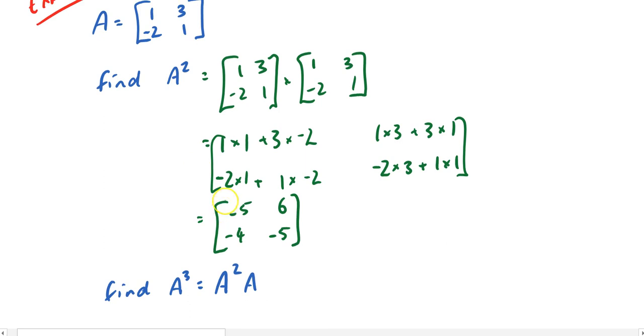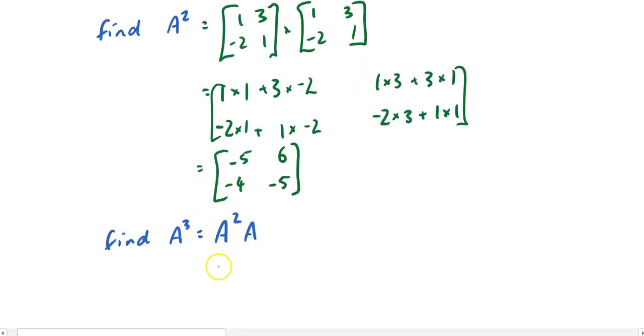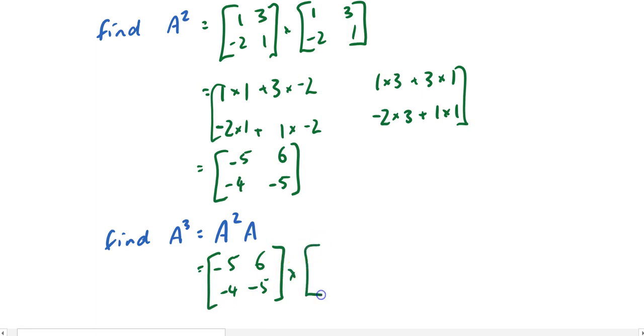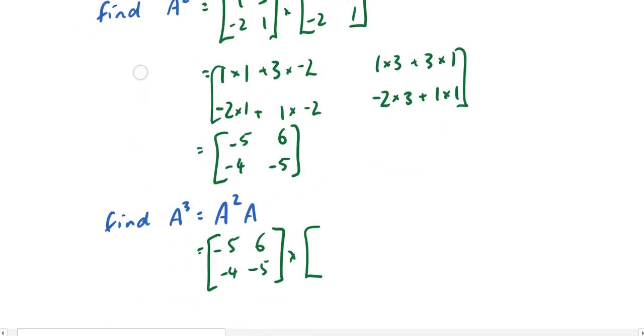You just find A squared and then multiply it by A after that. So it's negative 5, 6, negative 4, negative 5 and multiply it by A, which is 1, 3, negative 2, 1.